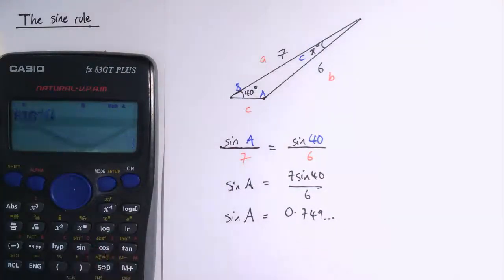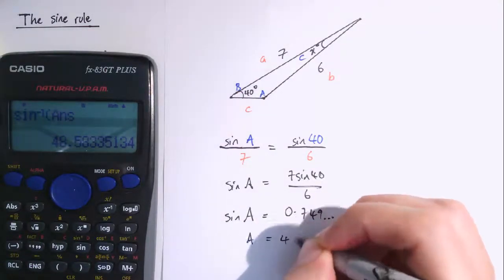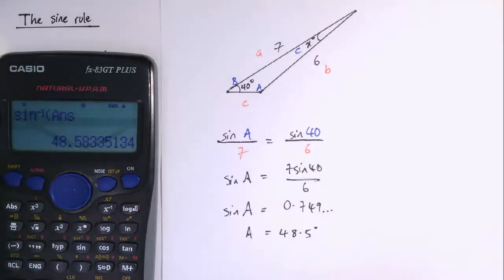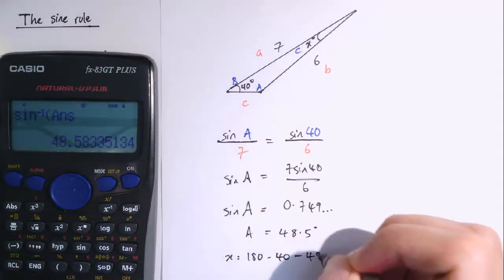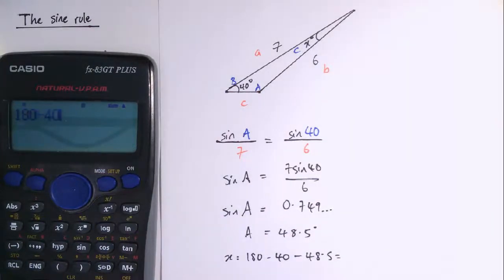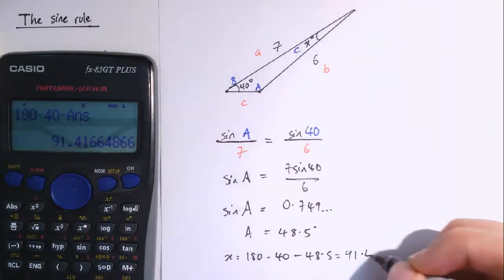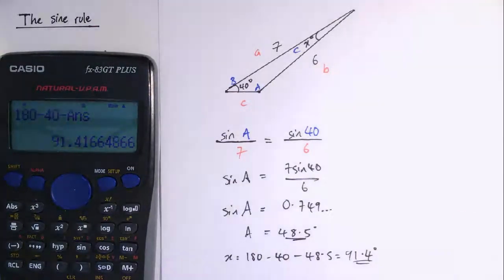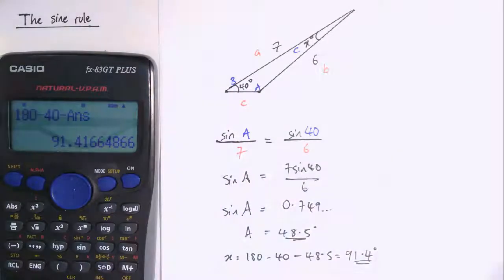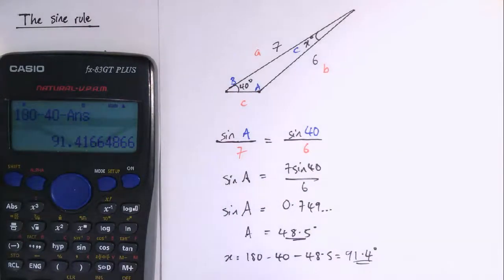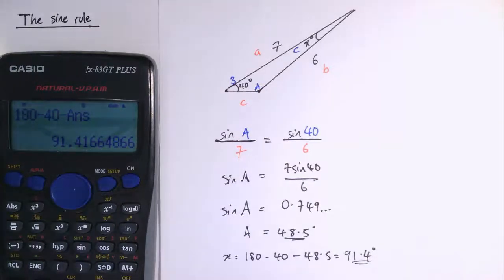So sin A equals 0.749, and then shift sign, that inverse sign we get that A is 48.5 degrees, and so X is 180 minus 48.5, which is 91.4 degrees to one decimal place. Fine, looks like we've solved it, but if we go back to the triangle, well, A being 48.5 degrees and X being 91.4 degrees just doesn't seem right, does it? I mean, it just looks totally wrong for the triangle that we've drawn, and otherwise this triangle doesn't look to be too far out of proportion. So I think this hasn't really solved this problem.